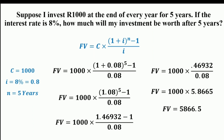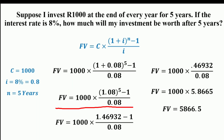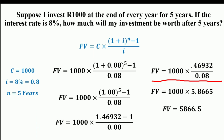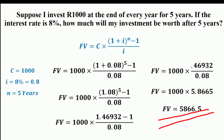Substituting these values: FV = 1,000 × [(1 + 0.08)^5 − 1] / 0.08 = 1,000 × [(1.08)^5 − 1] / 0.08. Now, 1.08 raised to the power 5 equals 1.46932. So, FV = 1,000 × (0.46932 / 0.08) = 1,000 × 5.8665. Therefore, the future value is equal to 5,866.5.